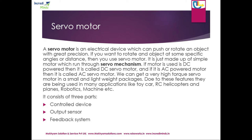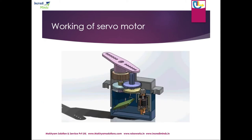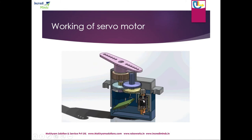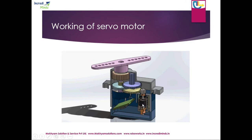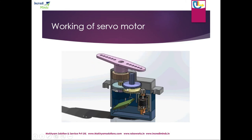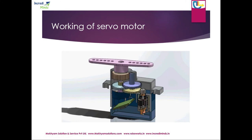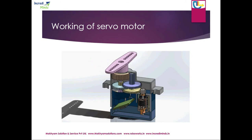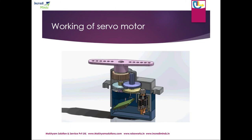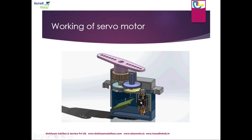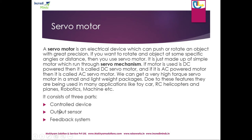A normal servo motor has three parts: one is the control device, one is the output sensor, and the other is the feedback system. There is also a small motor fixed inside with a complete gearing system. We use the gearing system to increase the torque, since torque is inversely proportional to speed. This is the control system with its three parts: control device, output sensor, and feedback system.